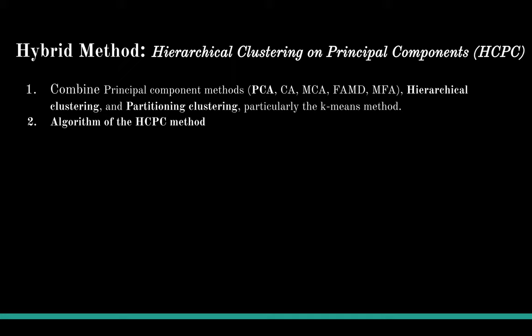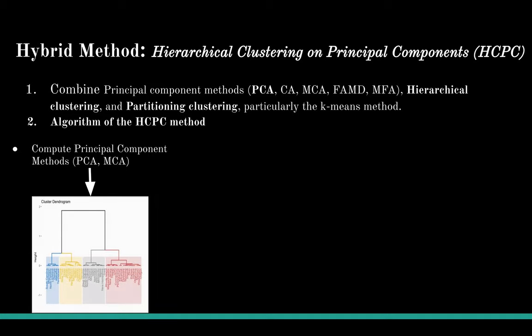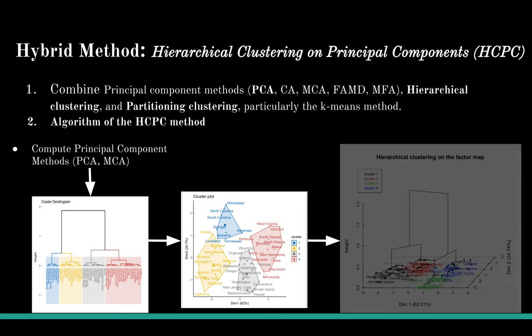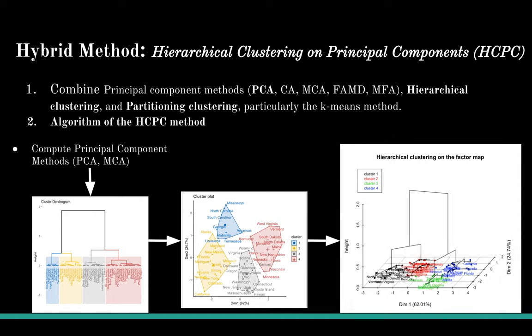The algorithm of the HCPC method is as follows. First, calculate principal components of the data — PCA, CA, or MFA — depending on the types and structure of variables in the dataset. At this step, we can choose the number of dimensions to retain by specifying the argument NCP. Next, compute hierarchical clustering using Ward's criterion on the selected principal components. Ward's criterion is used because it is based on multidimensional variance like principal component analysis. The next step is to choose the number of clusters based on the hierarchical tree by cutting it to form an initial partition. Then perform K-means clustering to improve the initial partition. The final partitioning solution after consolidation with K-means can be slightly different from the one obtained with hierarchical clustering.